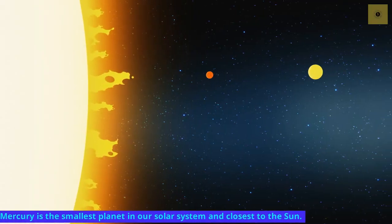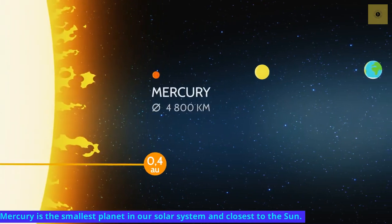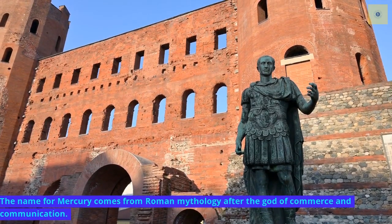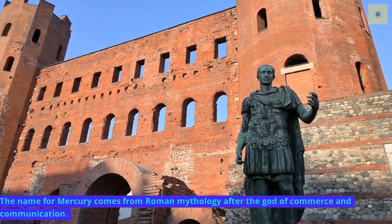Mercury is the smallest planet in our solar system and closest to the Sun. The name for Mercury comes from Roman mythology after the god of commerce and communication.